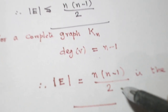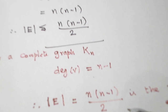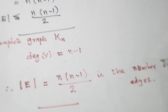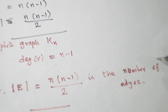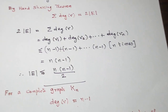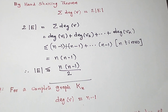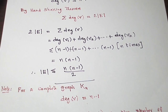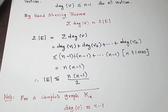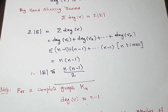So, a complete graph will have n(n-1)/2 edges. With this, the proof is over for this theorem. Let us see another important theorem on disconnected graphs in the next video. Thank you.